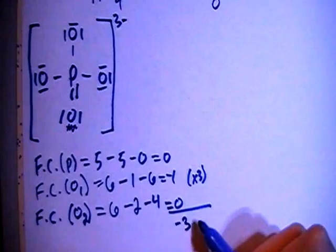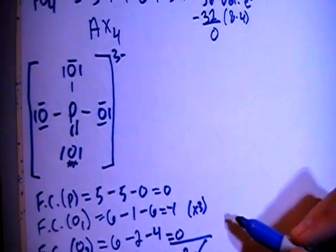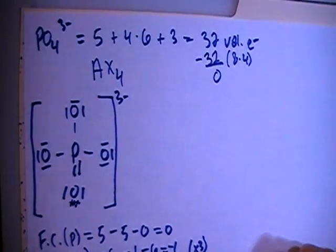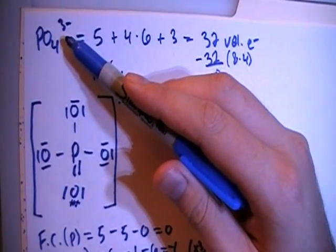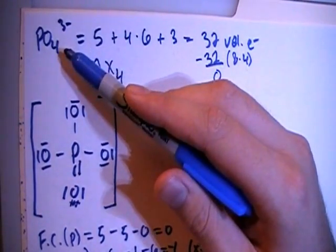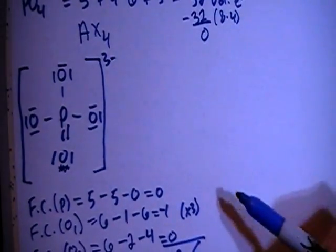That gives you minus 3, which matches up, which is what we're looking for, because the total formal charge is supposed to match up with the charge on the ion.